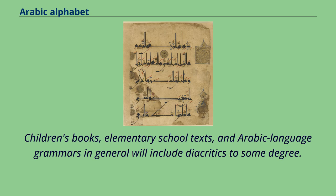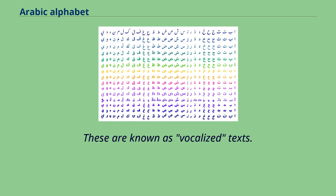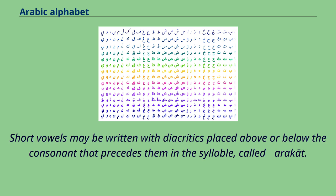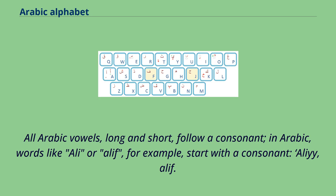Children's books, elementary school texts, and Arabic language grammars in general will include diacritics to some degree. These are known as vocalized texts. Short vowels may be written with diacritics placed above or below the consonant that precedes them in the syllable, called harakat. All Arabic vowels, long and short, follow a consonant.